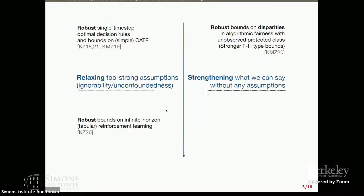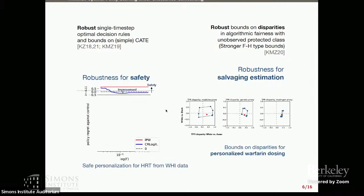I'll highlight two directions. The first focuses on relaxing overly strong assumptions, namely unconfoundedness or ignorability. The second starts from the data, asking what we can say without assumptions, then incorporating domain knowledge or structural knowledge from math programming and optimization to strengthen our conclusions.